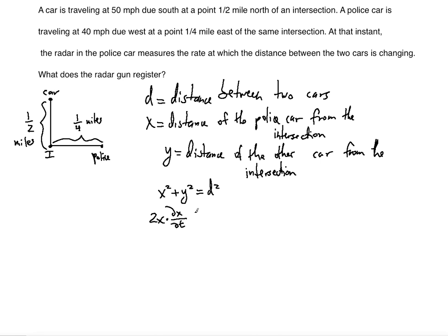We need to find the rate at which the distance between the cars is changing, which is a rate with respect to time. Continuing the differentiation, the y term gives 2y · (dy/dt), and the right side gives 2d · (dd/dt). So our differentiated equation is: 2x(dx/dt) + 2y(dy/dt) = 2d(dd/dt).